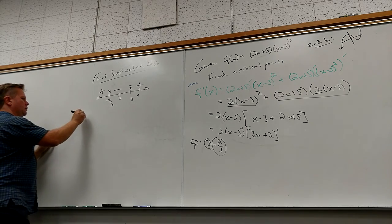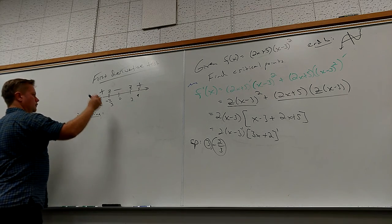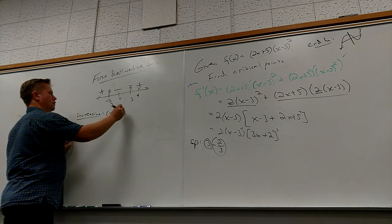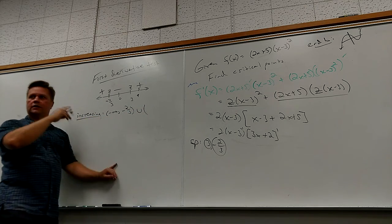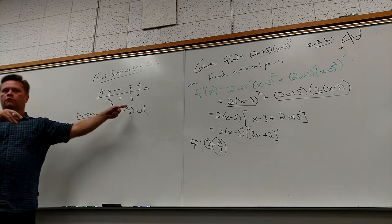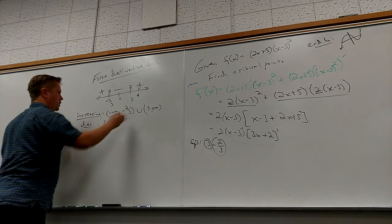So it's increasing from what to what? Negative infinity to negative two-thirds, or from where else is it increasing? Three to infinity. And of course, it's decreasing in between there.